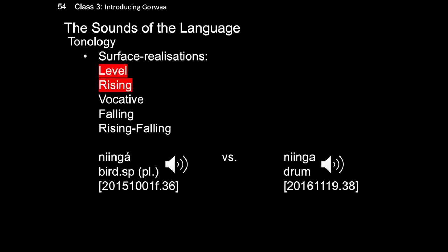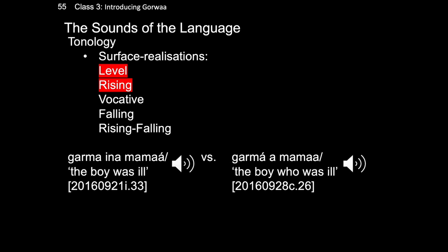The distinctions between level and rising play a particularly important role in Gorwa. Here we can see rising and level being the key way two words are distinguished: ninga, a type of pigeon, has a rising realization, and ninga, a drum, has a level realization. Even more widespread is the use of level and rising to mark grammatical differences. The form with level on the noun and rising on the verb means 'the boy was ill,' and the almost identical form with rising on the noun and level on the verb means 'the boy who was ill.'